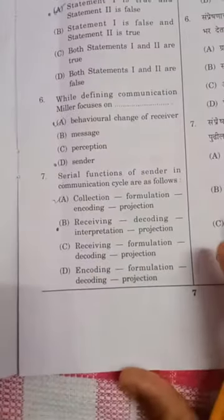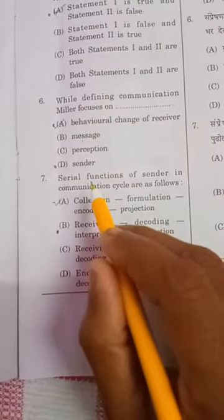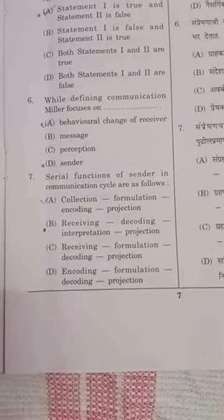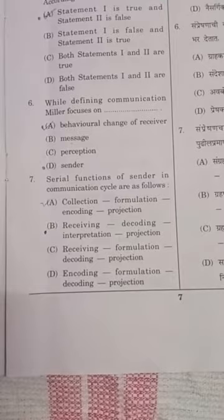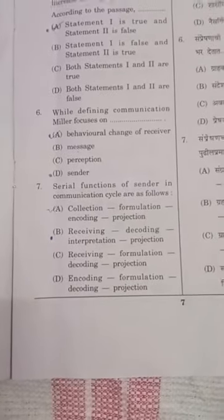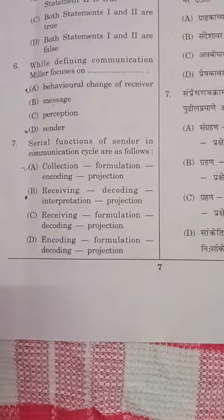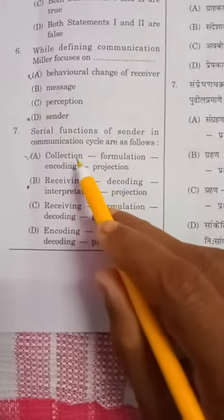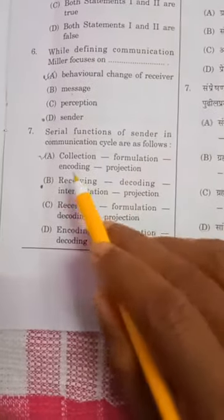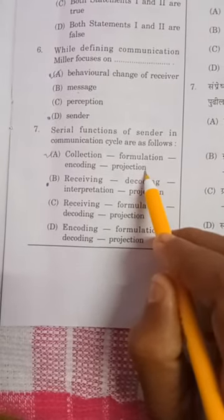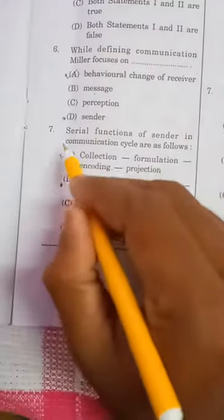The serial function of the sender in the communication cycle is as follows. In the communication process, there are two parties: the sender and the receiver. The sender will collect the data, formulate the information, encode it, and transfer it to the receiver. So option A is the right answer for the seventh question.